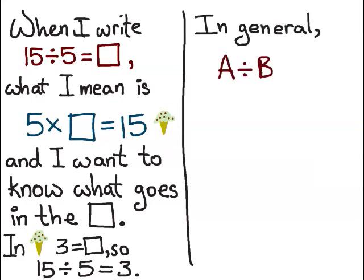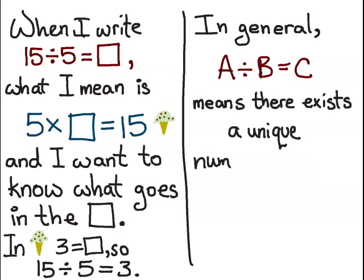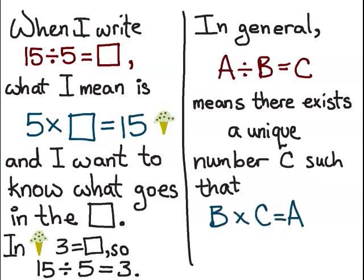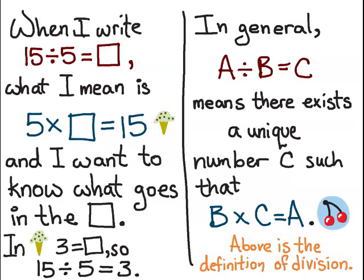In general, A divided by B equals C means that there exists a unique number C such that B times C equals A. I'm going to call this equation cherry and what I have above is the definition of division. So this is the formal mathematical definition of division and we can see the C is what we normally think of as the answer to the division problem.